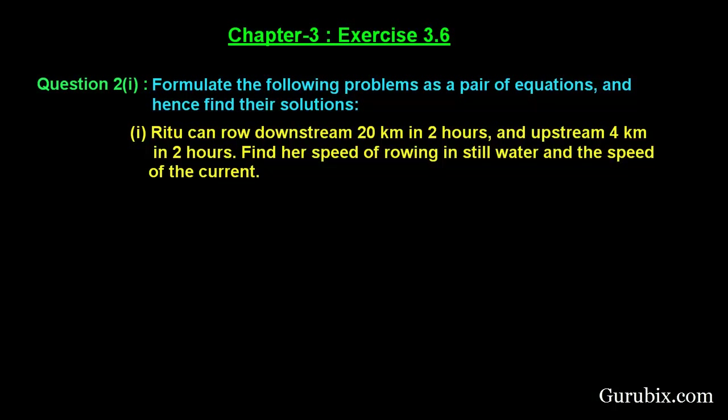Welcome friends. Let us solve the first part of question number 2 of exercise 3.6 of chapter 3. The question says: formulate the following problems as a pair of equations and hence find the solution. The problem is: Ritu can row downstream 20 km in 2 hours and upstream 4 km in 2 hours. Find her speed of rowing in still water and the speed of the current.